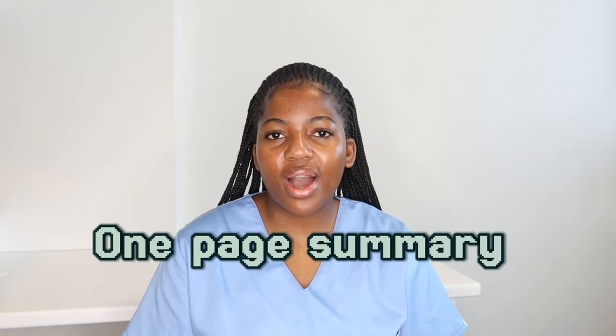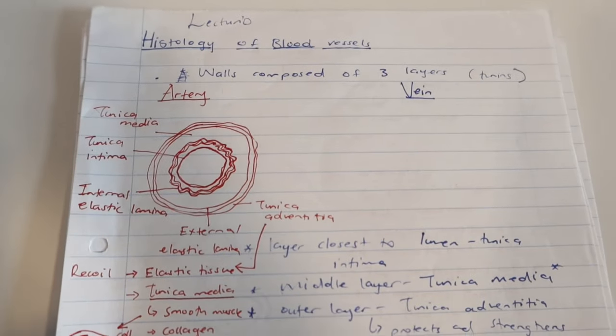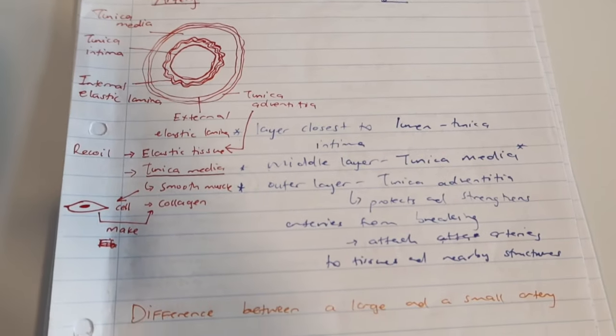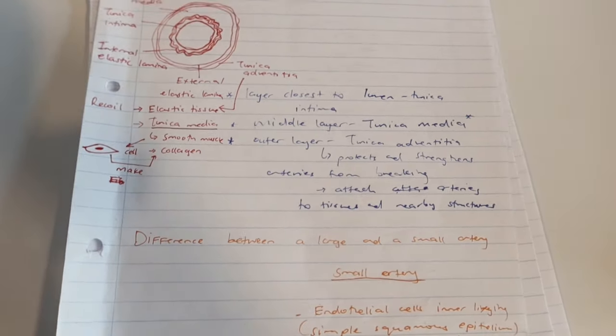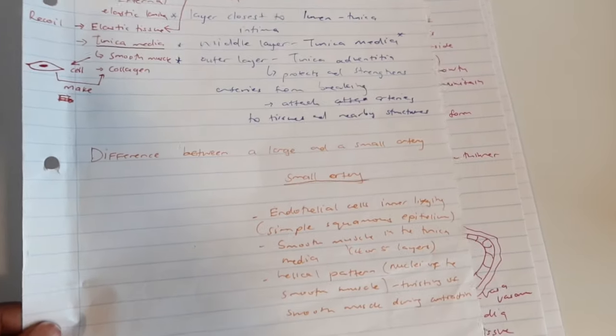So the first method we're going to look at is one page summaries. So this is how I used to make notes in first year. I had this big handwriting. I didn't use all the space that was on my page.